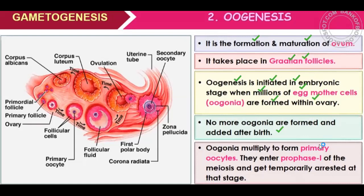Oogenesis is multiplied by the primary oogenesis. Primary oocytes are arrested in prophase 1. Recall from the meiosis chapter — meiosis 1 is arrested at prophase 1.